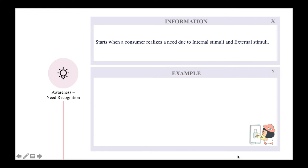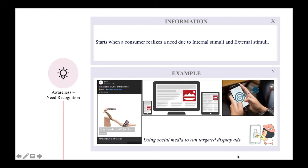The first stage is awareness or needs recognition. It starts when a consumer realizes a need due to internal stimuli like physiological or emotional needs, and external stimuli from advertisements. Online marketing communications support this stage by using targeted display ads, email ads, and social media. For example, Facebook is used to advertise a shoe brand called Daily to female users.